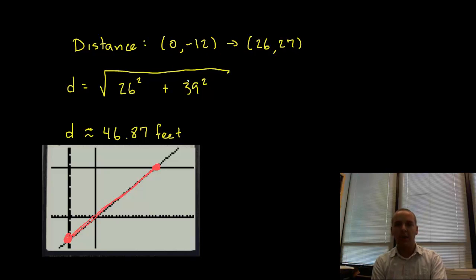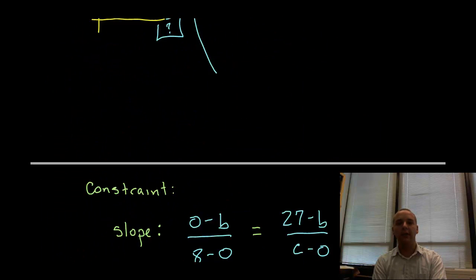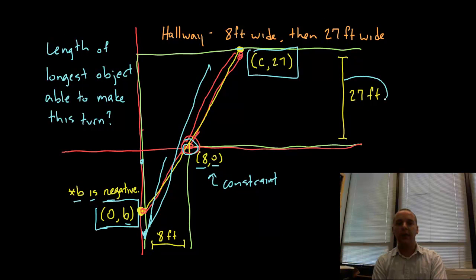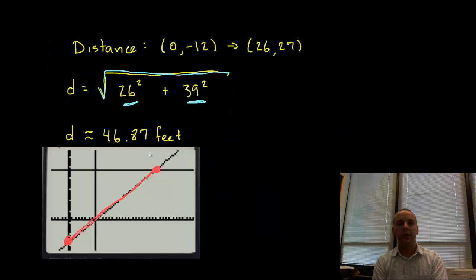So you take Y2 minus Y1, that's 39 squared, and then X2 minus X1, that's 26, and we square that, and the distance is the square root of the sum of those two. And you get 46.87 feet, about 49 feet. And just based off of the hallway, and just thinking about our answer, that seems very in line with the types of numbers that we started with, it seems very reasonable here.